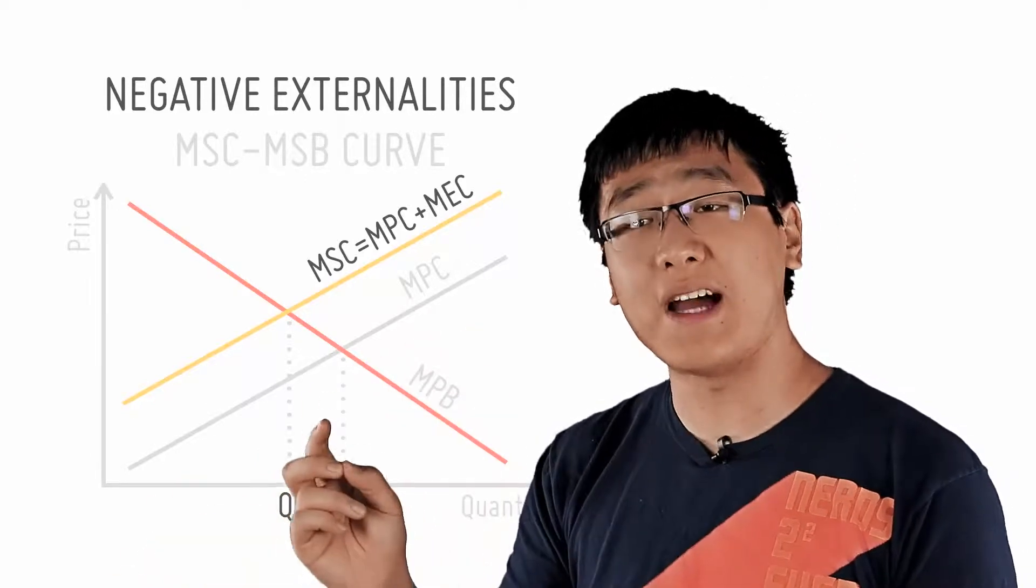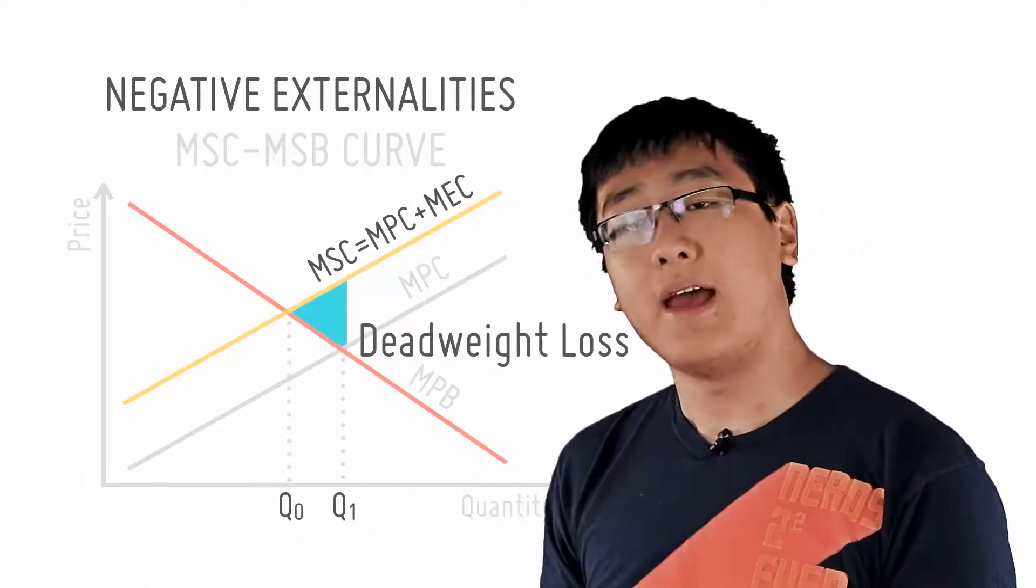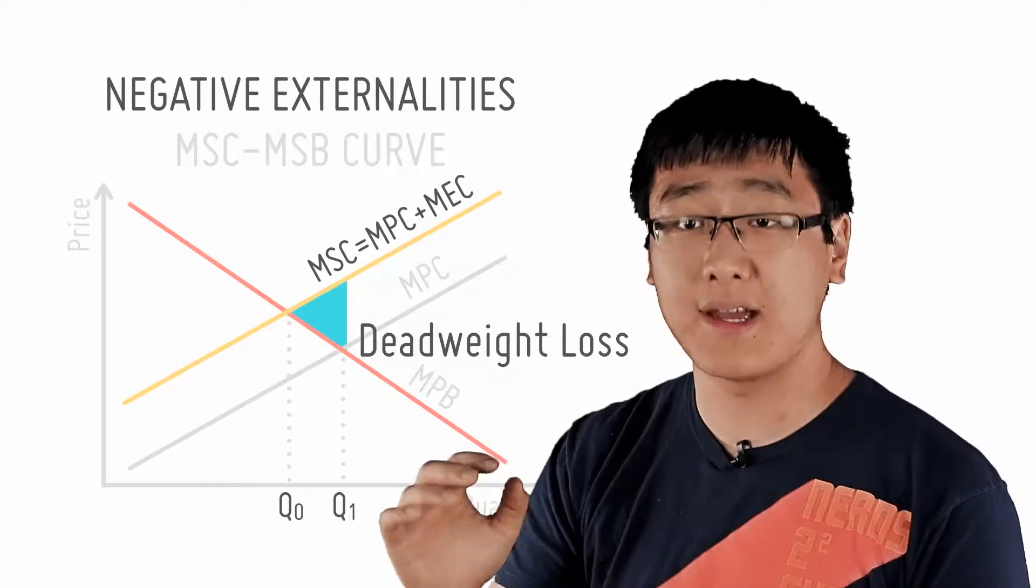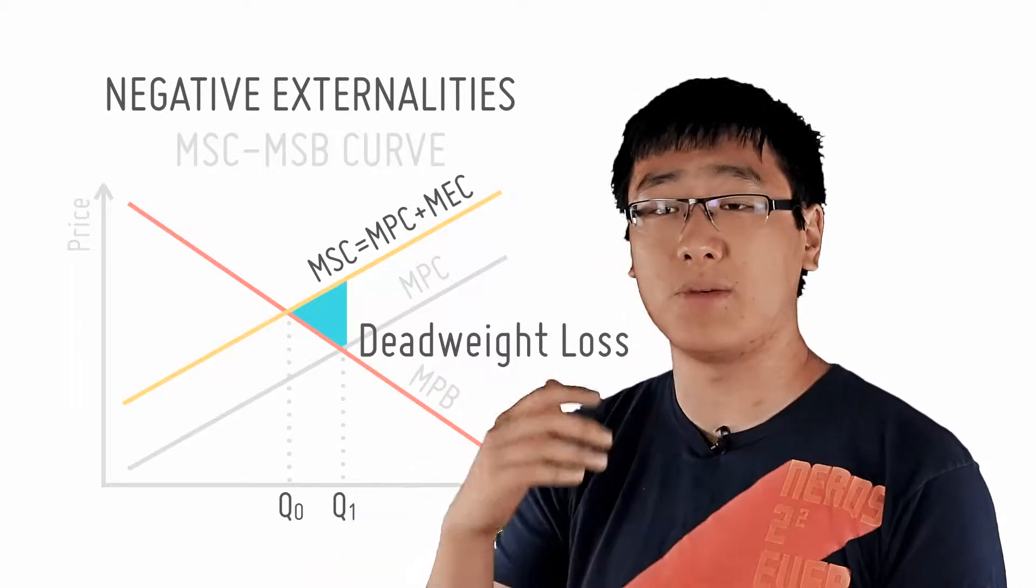Now how do we quantify the effect of this overproduction? We go back to the idea of deadweight loss. As a result of overproducing, the firm is causing society to bear more cost than it should be. Hence the additional cost that is not captured by the additional benefit that a consumer enjoys.